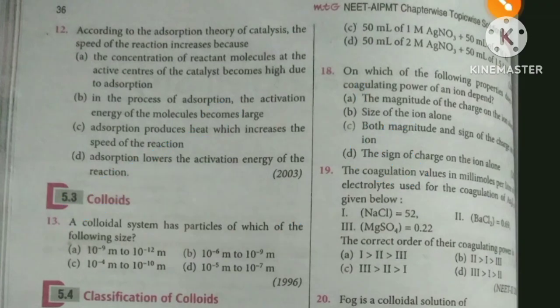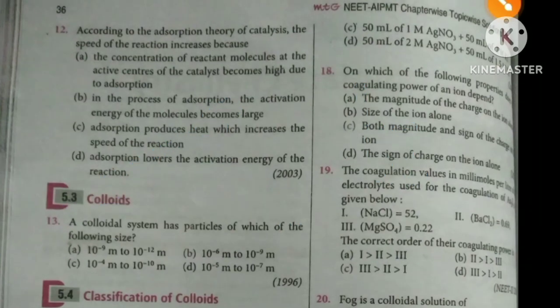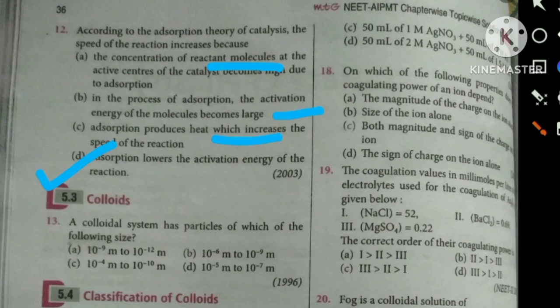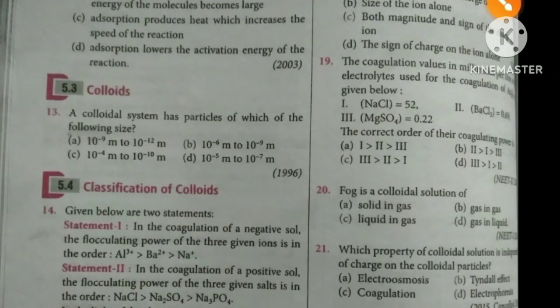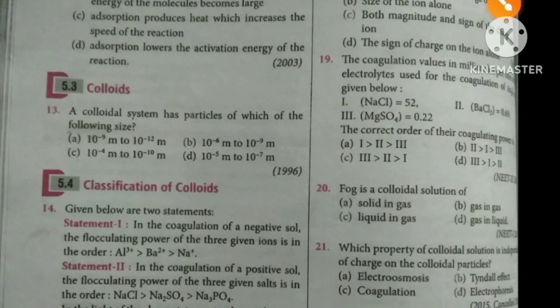Next question: Which of the following particle sizes falls in the colloidal range? The sizes given are 10⁶, 10⁻⁶, and 10⁻⁹ meters. You need to convert the values to nanometers to determine which falls in the colloidal range.